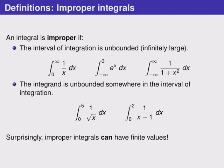An integral is called improper if one of two things happens. Either the interval of integration itself is unbounded because an infinity appears in one of the limits of integration, or the integrand is unbounded somewhere in the interval of integration.